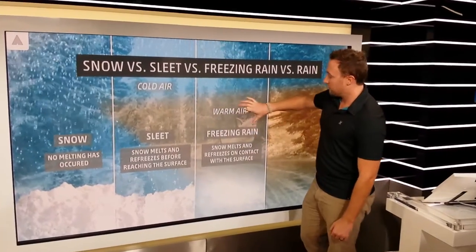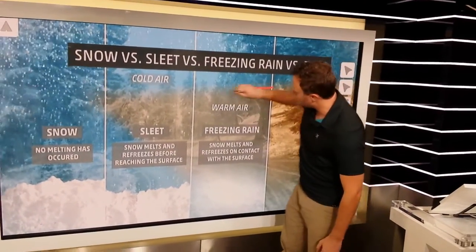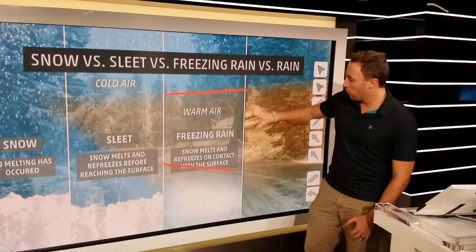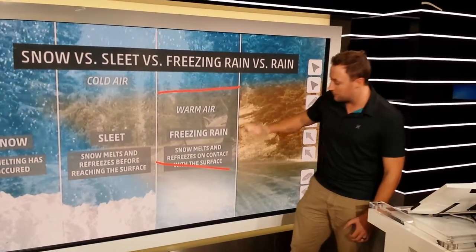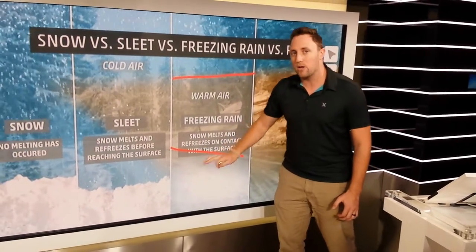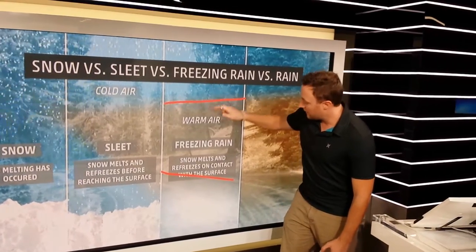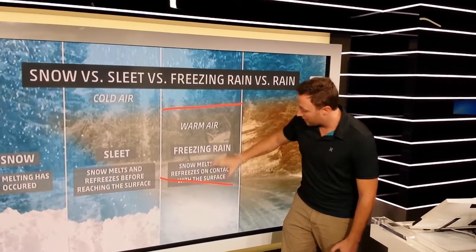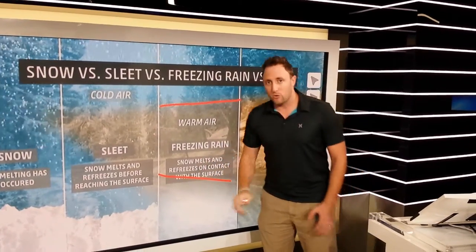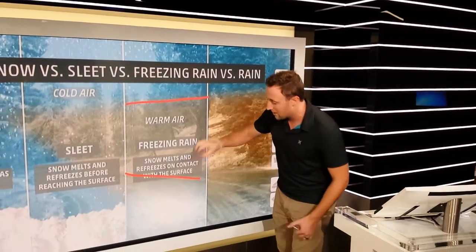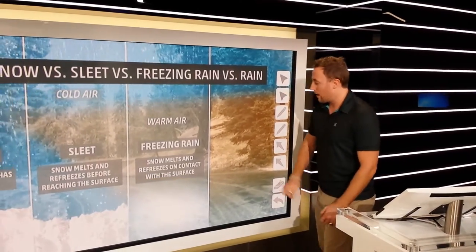A little further on, you get a stronger wedge of warm air and it stays pretty warm through most of the atmosphere, but down to the ground it's still very cold. So you have snow that falls, then melts as it goes through the warmer layer, and once it hits the ground the cold raindrops freeze instantly on contact.